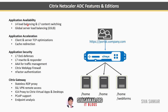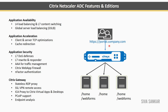The first feature is L4 load balancing. What is load balancing? Typically, if you have an application like portal.company.com, it might be hosted on three servers. What we do is load balance the traffic — the first user goes to server one, the second to server two, the third to server three. This provides availability if one server goes down.